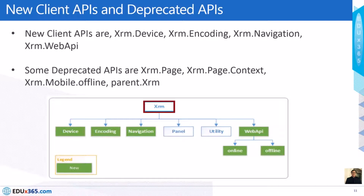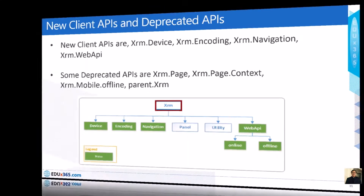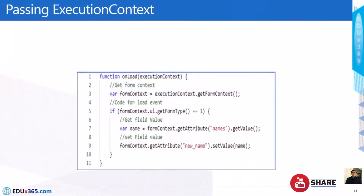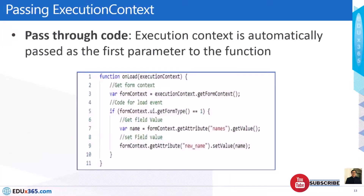For the execution context, we can pass it as a parameter through the UI. There is a checkbox — shown marked in the red box on screen — which says 'Pass execution context as first parameter.' In the code we receive that parameter and use the execution context. For the onload event, it automatically passes the first parameter of the function, and this snippet shows an example of getting the execution context as a parameter.